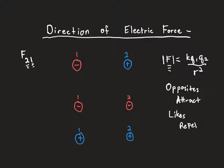The force of charge 2 on charge 1 asks: where is charge 1 going to go because of charge 2? Because the signs are opposite, the force is going to be attractive — opposites attract. So charge 1 is going to move towards charge 2, meaning the force of charge 2 on charge 1 is to the right, which is customarily considered positive.